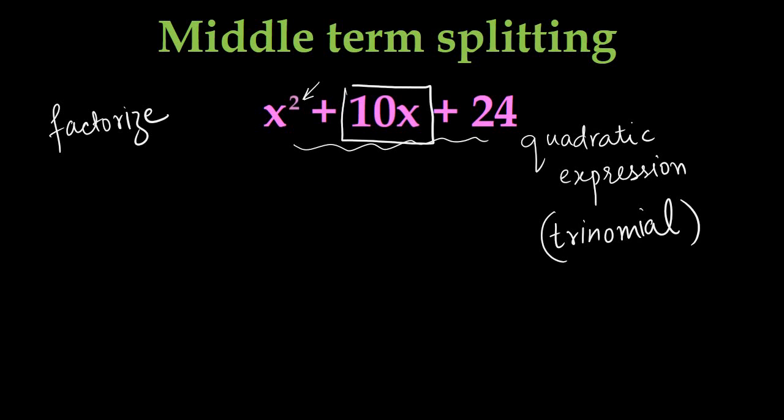So in middle term splitting, let me write it again: x² + 10x + 24. What is the middle term? 10x. We need to split this. That's why the name.